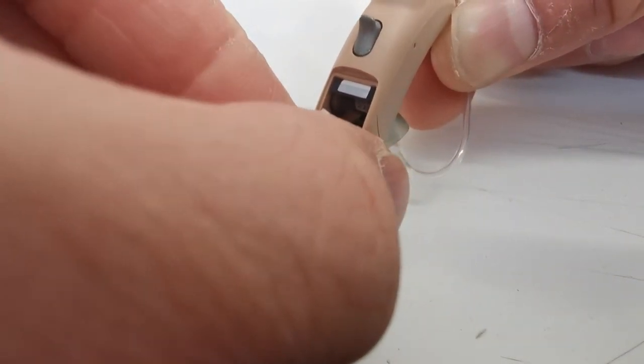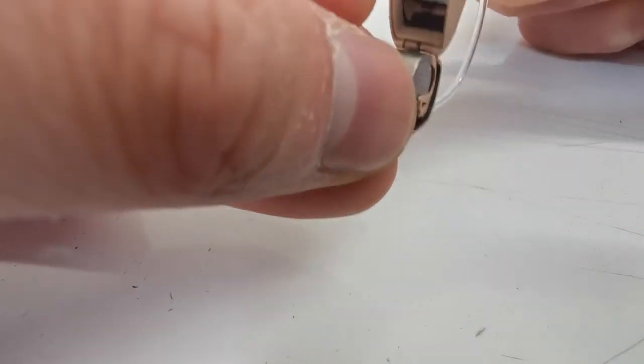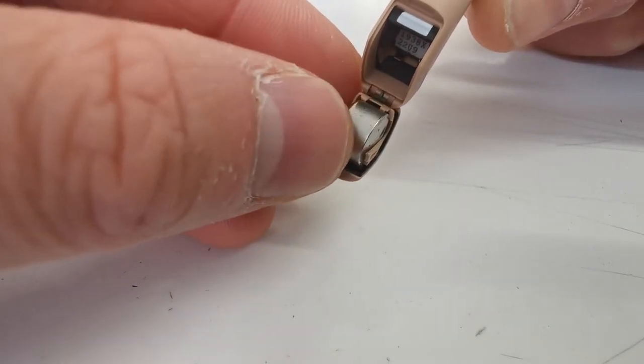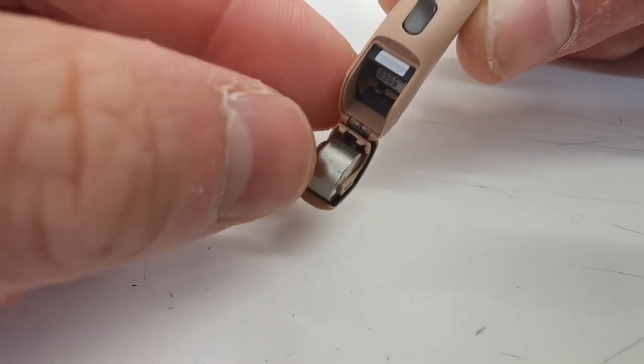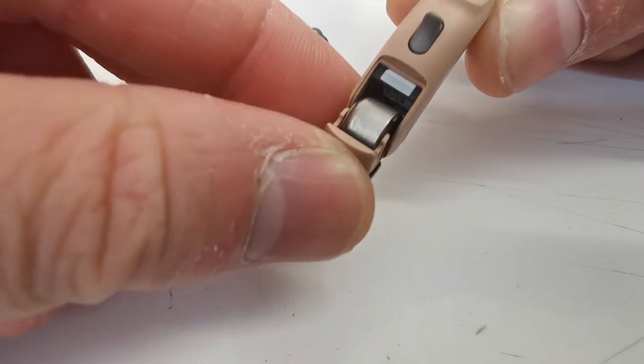If you have the battery the wrong way around, you'll find it doesn't sit in the battery drawer properly. Do not attempt to turn the hearing aid on with the battery the wrong way around as it can damage the hearing aid.